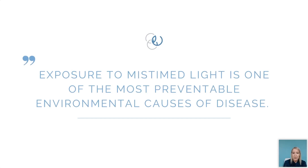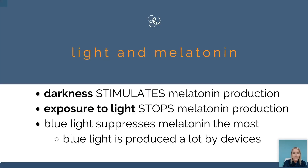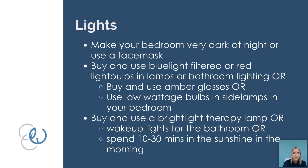Remember that exposure to mistimed light is one of the most preventable environmental causes of disease. We want to make sure we're using light to our advantage. Darkness stimulates melatonin production — the hormone of sleep — whereas exposure to light stops melatonin production. Blue light suppresses melatonin the most, and it's produced by many devices around us: computers, phones, and TVs.